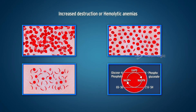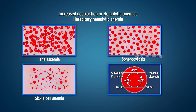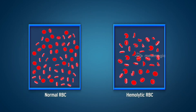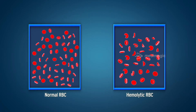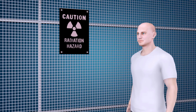Increased destruction, or hemolytic anemias, includes hereditary types such as thalassemia, spherocytosis, sickle cell anemia, and G6PD deficiency. Acquired hemolytic anemias include immunohemolytic anemia and anemia due to exposure to toxins.